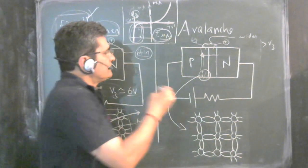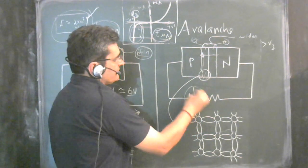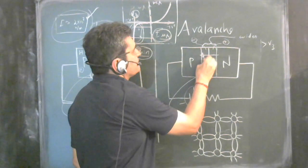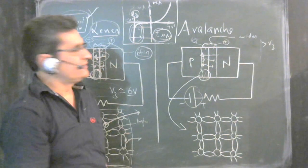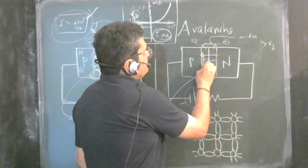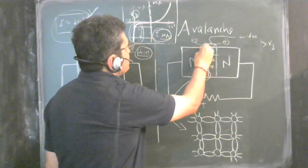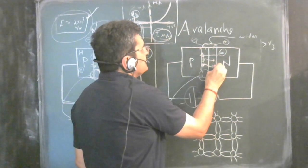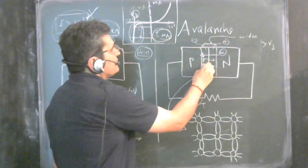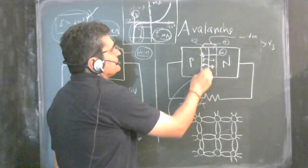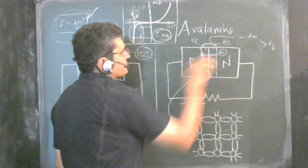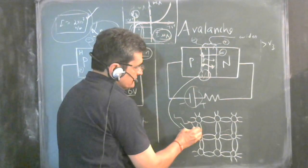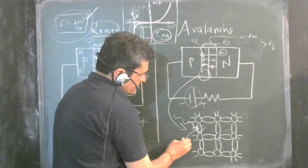When reverse bias is applied, it is again the minority carriers which produce the current. The electrons which are minority on the P side will cross over to the N side. As these electrons move through the depletion region, they are affected by the very high electric field, which gives them very high kinetic energy. This kinetic energy is further increased by the reverse bias voltage, so these electrons move with high velocity.